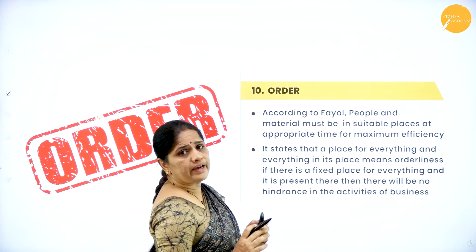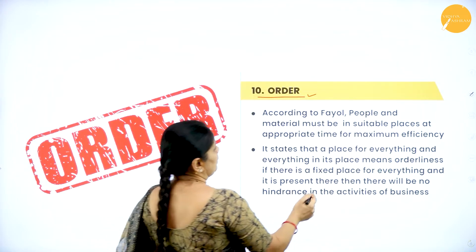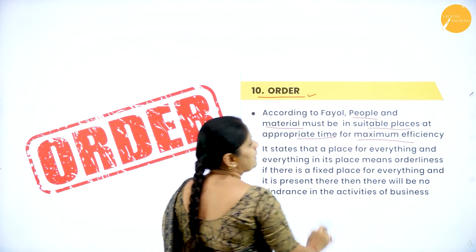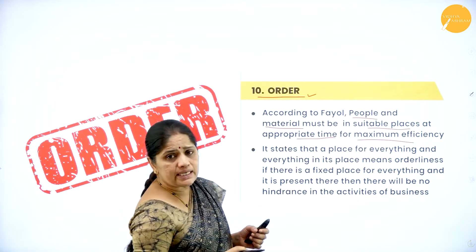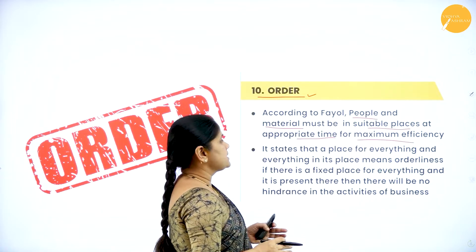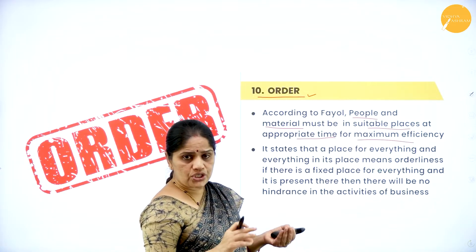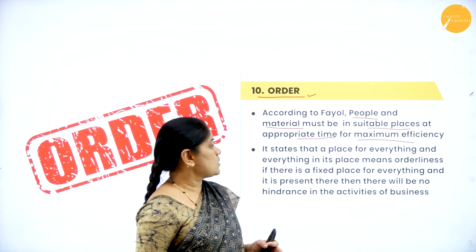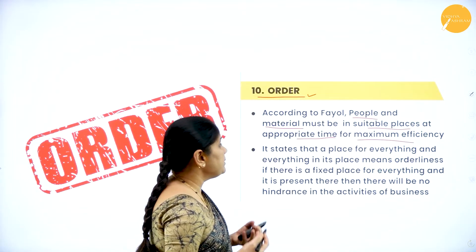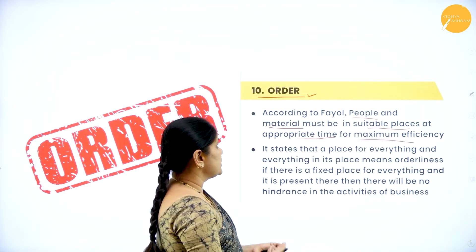The tenth principle of Henry Fayol is order. According to Fayol, people and material must be in suitable places at appropriate times for maximum efficiency. Everything and all resources in the organization should be in suitable places. The machinery, workers, and their positions should be at their designated places only, as this ensures maximum efficiency.